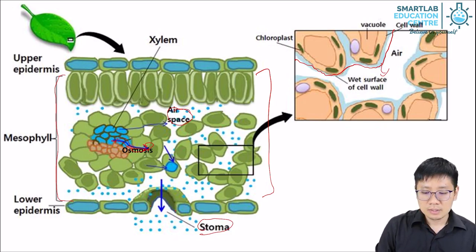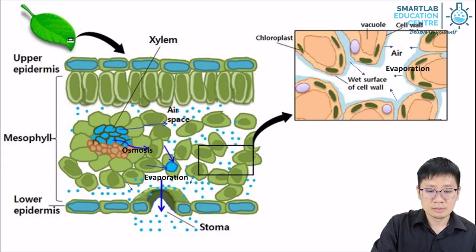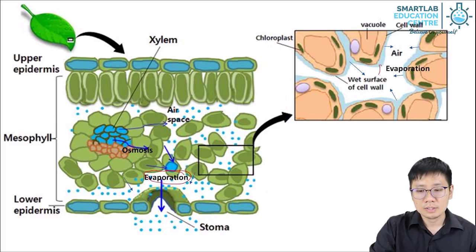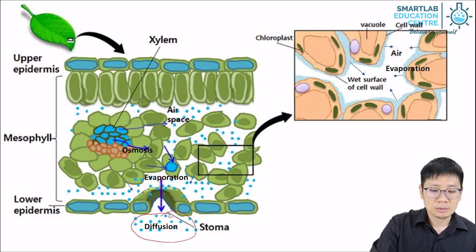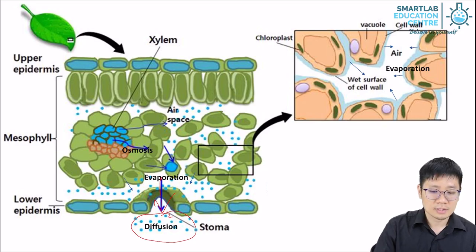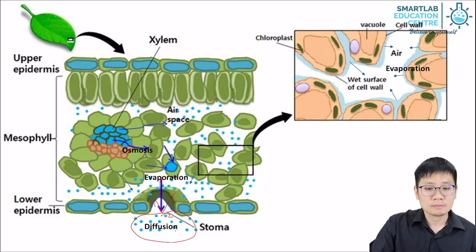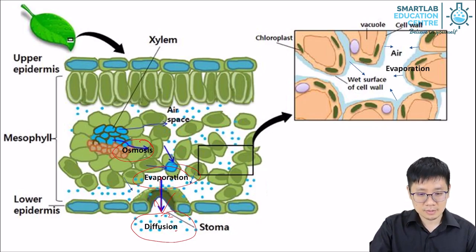To recap, there are three processes. First, osmosis moves water out of the xylem into the mesophyll cells. Then evaporation occurs from the surface of the mesophyll cells. The water vapour is now in the airspace. Then we have diffusion — the water vapour inside the leaf is at a higher concentration than outside the leaf, so water vapour moves out of the leaf by diffusion, not osmosis. So there are actually three different processes: osmosis, evaporation, and diffusion.